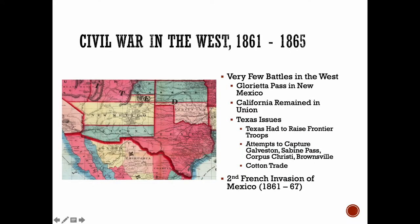In the West, there were very few battles — some in the New Mexico Territory. California remained in the union. Texas did see some attempts to capture Galveston and coastal areas as part of the North's Anaconda Plan to squeeze the South by limiting their ability to trade cotton. Texas was able to ship cotton over the Rio Grande and allow it to sail to Europe on Mexican ships. However, there was a French invasion of Mexico to collect debts, and the French held the throne in Mexico from 1861 past the end of the war, causing some trade disruption as well.